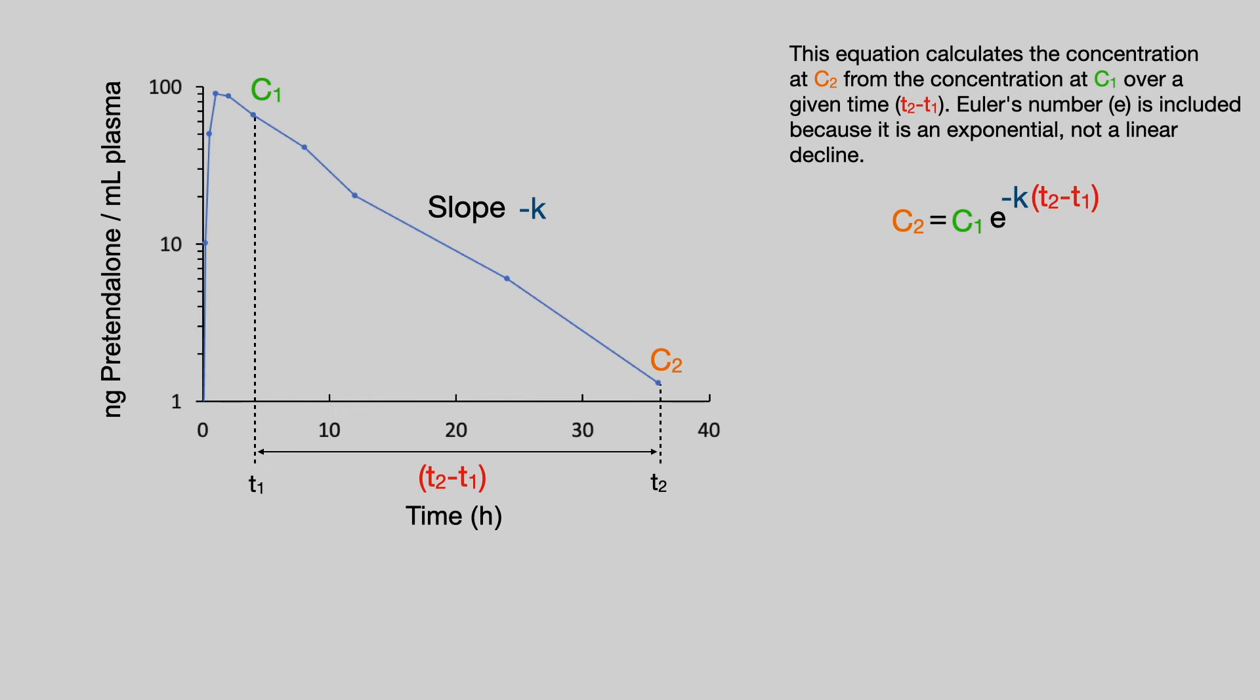This equation calculates the concentration at C2 from the concentration at C1 over a given time period. Euler's number, E, is included because we are dealing with an exponential, not a linear, decline. We are going to meet this equation a number of times in future videos.